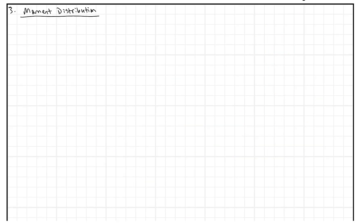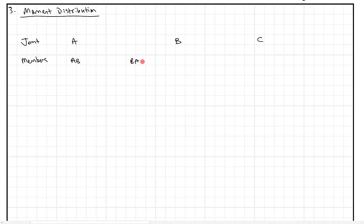What I like to do is make a table where we identify each of the joints. In this case, we have joint A, joint B, and joint C. I like to identify the members as well. So this is going to be the same for any moment distribution process. We identify member AB, member BA — both sides of that member — member BC, and member CB.